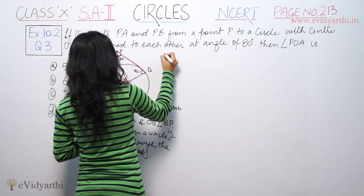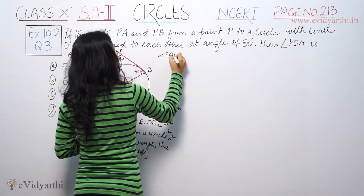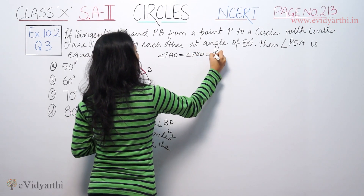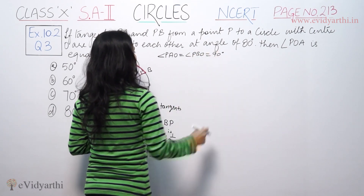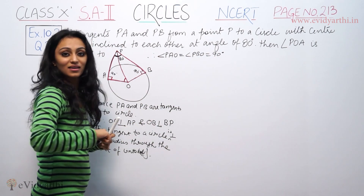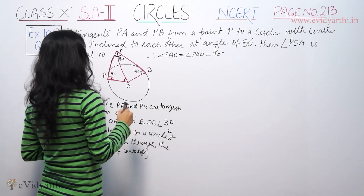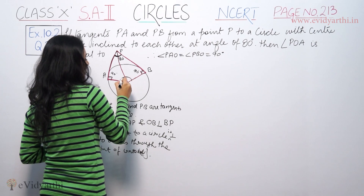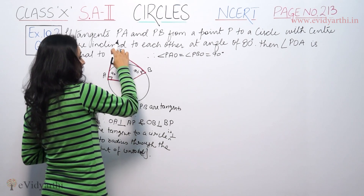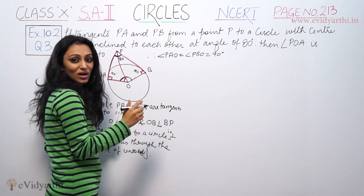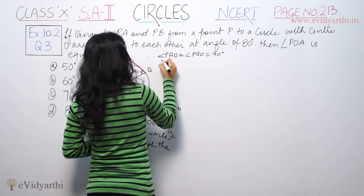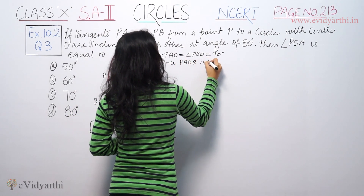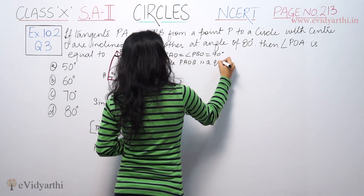That means angle OAP and angle OBP are both 90 degrees. We write: angle PAO = angle PBO = 90 degrees. Since PAOB is a quadrilateral, the sum of all its angles equals 360 degrees.